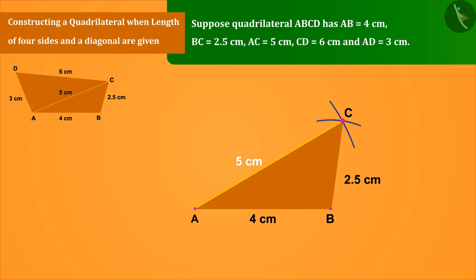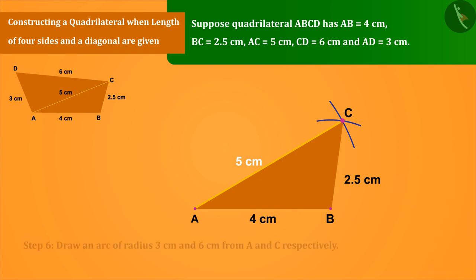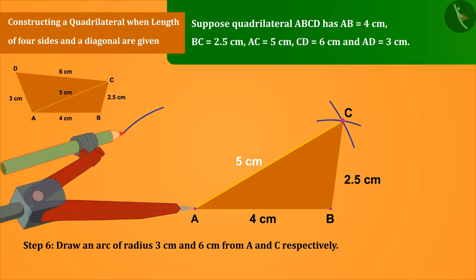Now, can you think about how to construct triangle ADC? Draw an arc of radius 3 cm and 6 cm from A and C respectively.